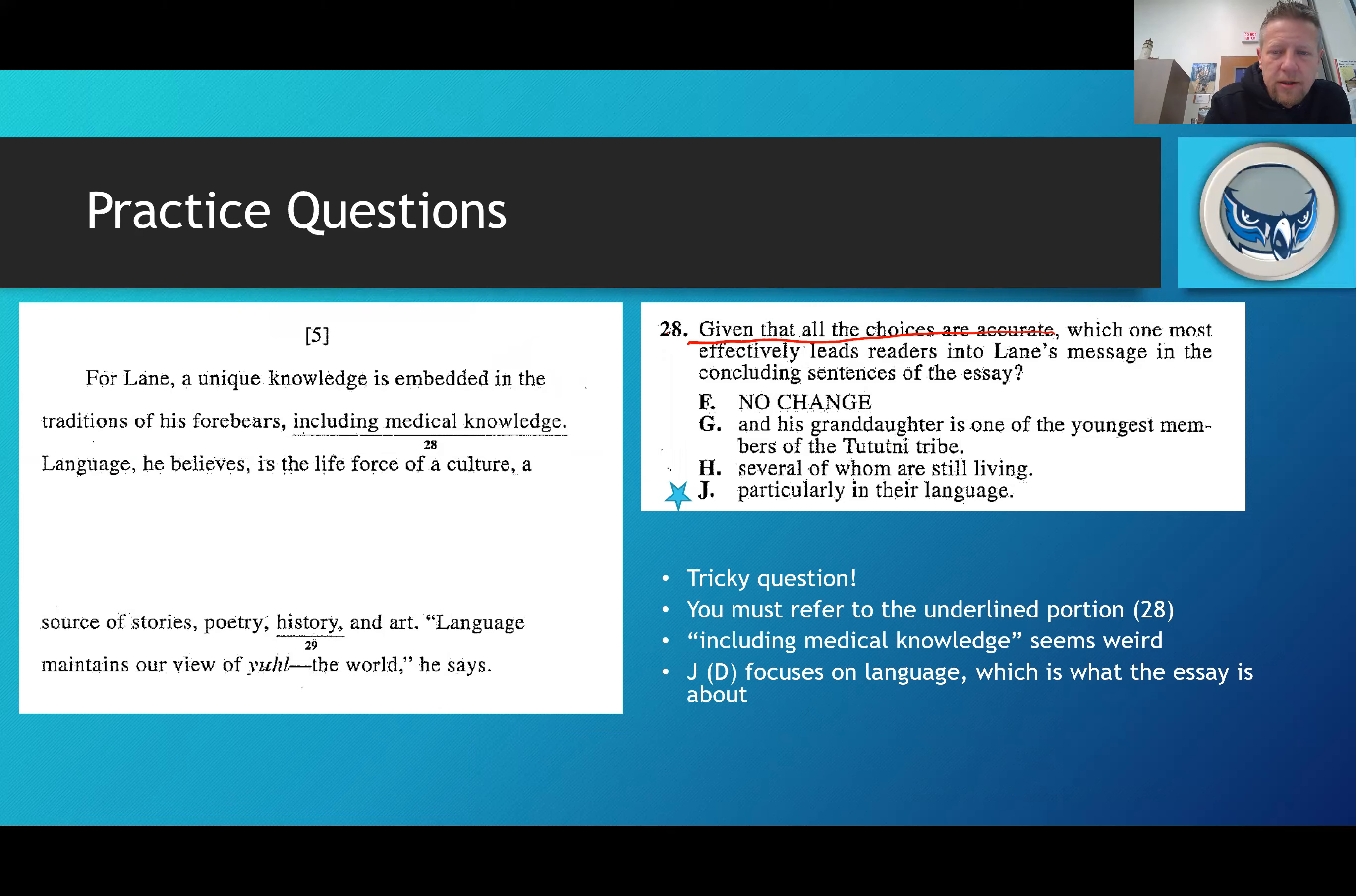Okay, fine. So the concluding sentence of the essay is language maintains our view of the world, he says. He's talking about language is the life force of a culture. He's talking about language maintains our view of the world. So if we're talking about language and its importance in the last couple sentences, and we're looking for the sentence which most effectively leads readers into that message, then we're probably looking at something other than for Lane a unique knowledge is embedded in the tradition of his forebears, including medical knowledge. Well what the heck does medical knowledge have to do with anything else we're talking about?